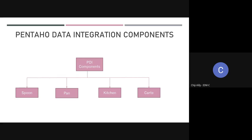And then you have Pentaho Cart, which D2D doesn't use. Cart is a lightweight web container that allows you to set up a dedicated remote ETL server, providing some similar functionality to the Pentaho data integration server. But Cart does not allow scheduling, security integration, or content management. D2D has its own Pentaho server and executes transformations and jobs from the command line. So D2D uses Spoon, Pan, and Kitchen, but not Cart.